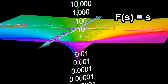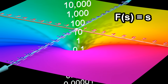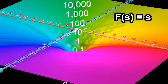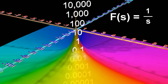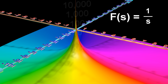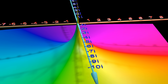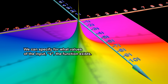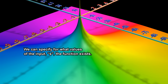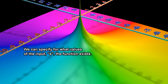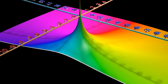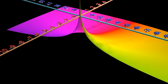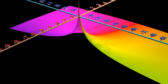The color of the graph at each point represents the phase of the output. This is the function where the output is exactly equal to the input, S. This is the function where the output is equal to 1 divided by the input. We can specify for what values of the input, S, the function exists. Here, the function exists where the real component of S is greater than zero.